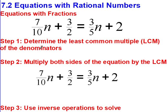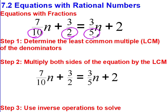I've got an equation with a bunch of fractions: 7 tenths n plus 3 over 2 equals 3 fifths n plus 2. Here are the two first steps to solve equations with fractions — really, how to get rid of the fractions. The first thing we want to do is determine the least common multiple of the denominators. I'm looking at my denominators: 10, 2, and 5.